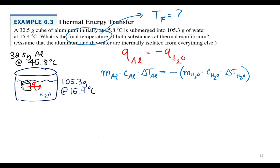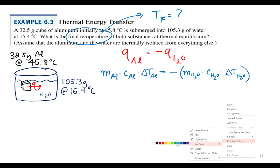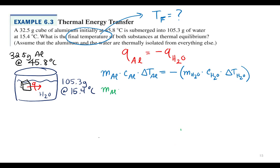We still need to see T_sub_f, so I have to break out that delta T. The mass of aluminum times the specific heat of aluminum times (T_sub_f minus T_initial of aluminum) equals negative mass of water times specific heat of water times (T_sub_f minus T_initial of water). The final temperature T_sub_f is the same for both; the initial temperatures are different — aluminum started at 45.8°C and water at 15.4°C.